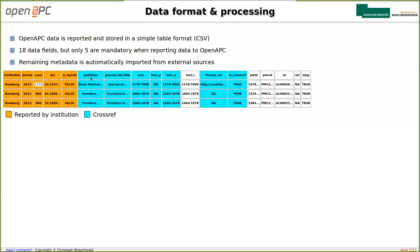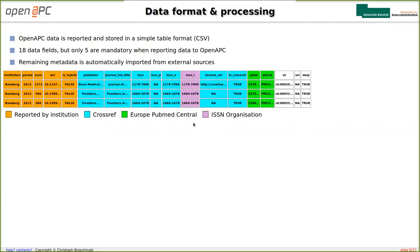For example, things like the publisher name or journal title are obtained from Crossref via the DOI, along with ISSN identifiers and license identifiers. PubMed and PubMed Central identifiers are imported from PubMed Central via API — no manual work involved. We also have the ISSN-L, the linking ISSN, imported from the ISSN organization in Paris. Then we have the UT, a unique identifier for the Web of Science. And finally, a Boolean marker indicating if the journal is listed in the DOAJ — the Directory of Open Access Journals.